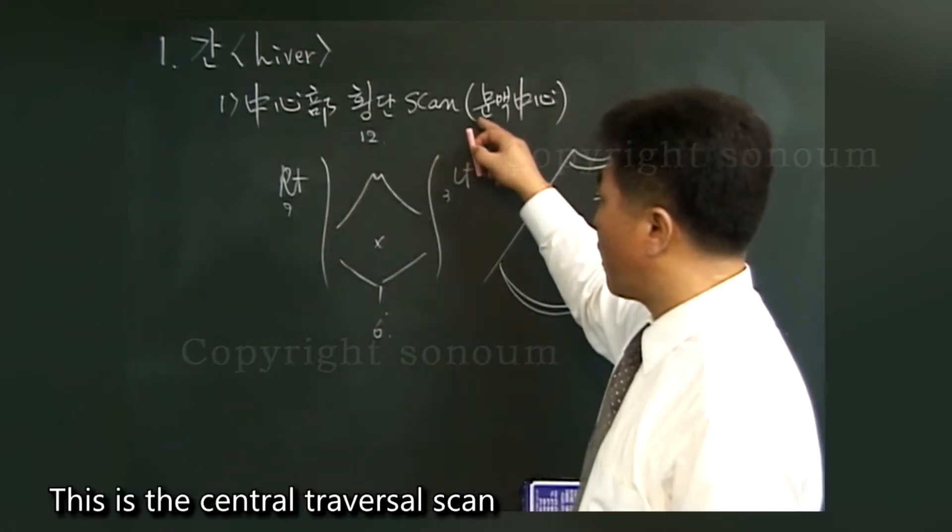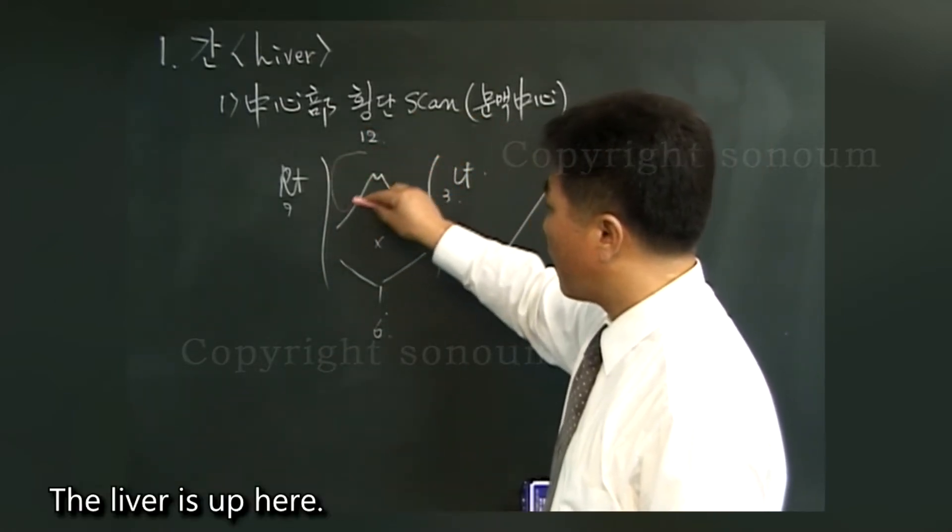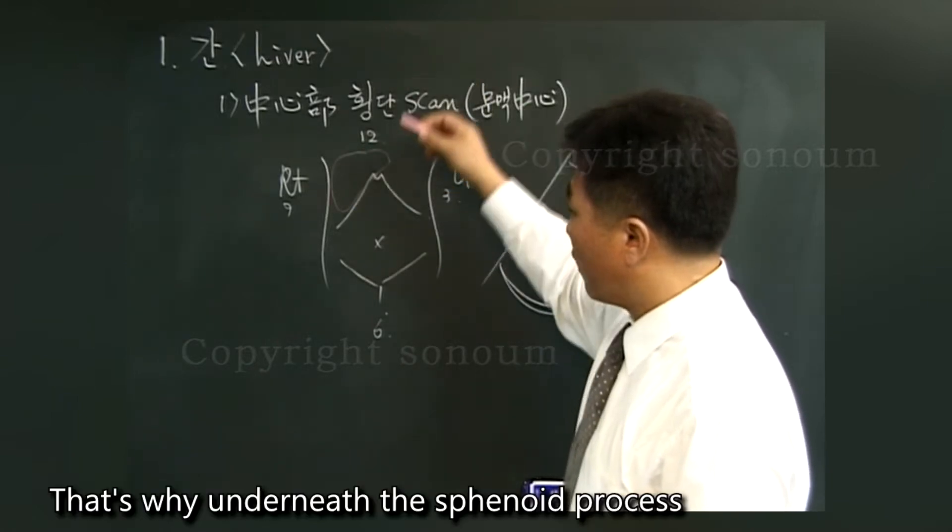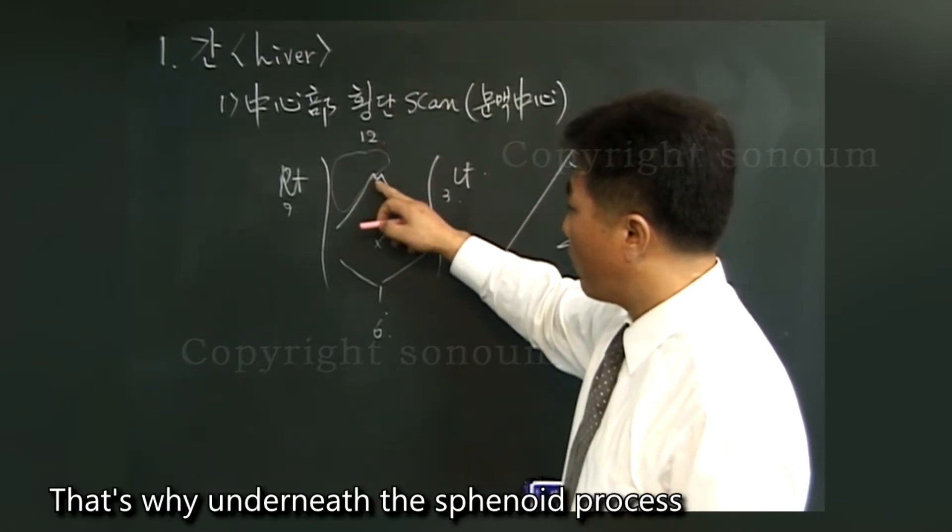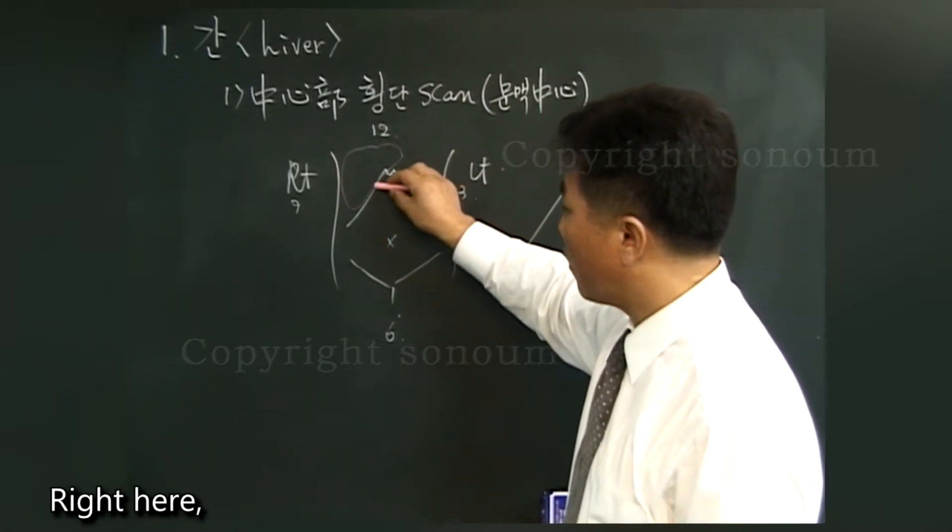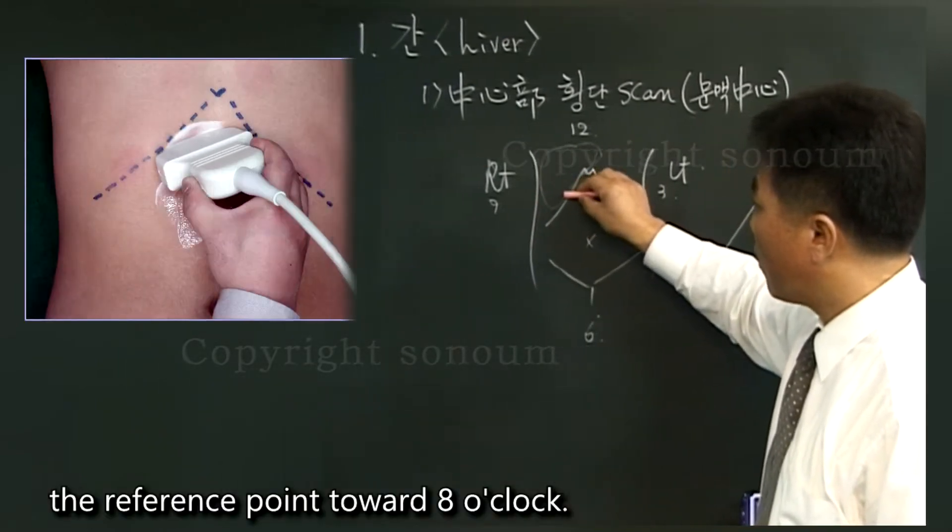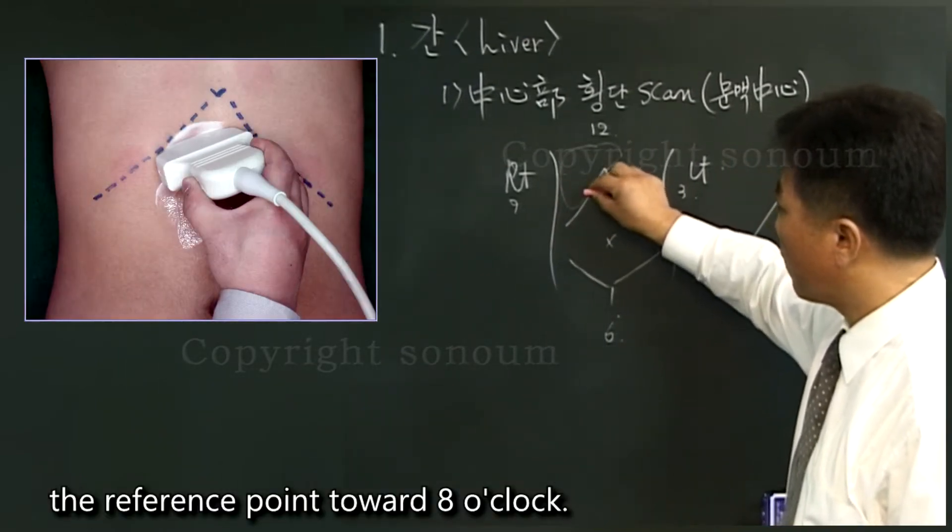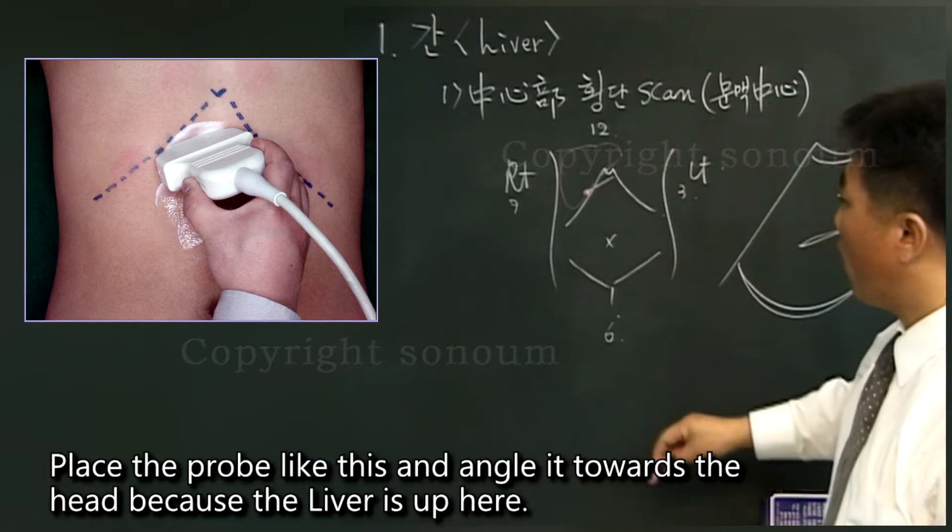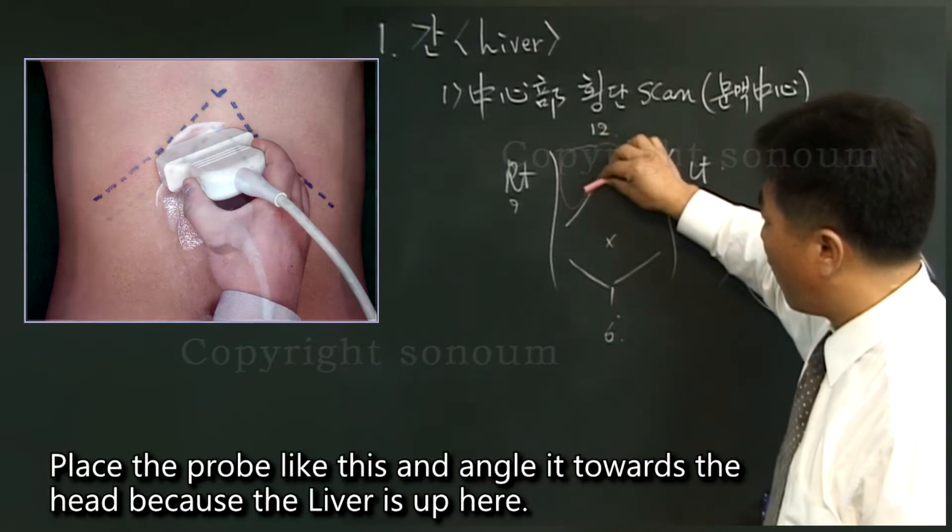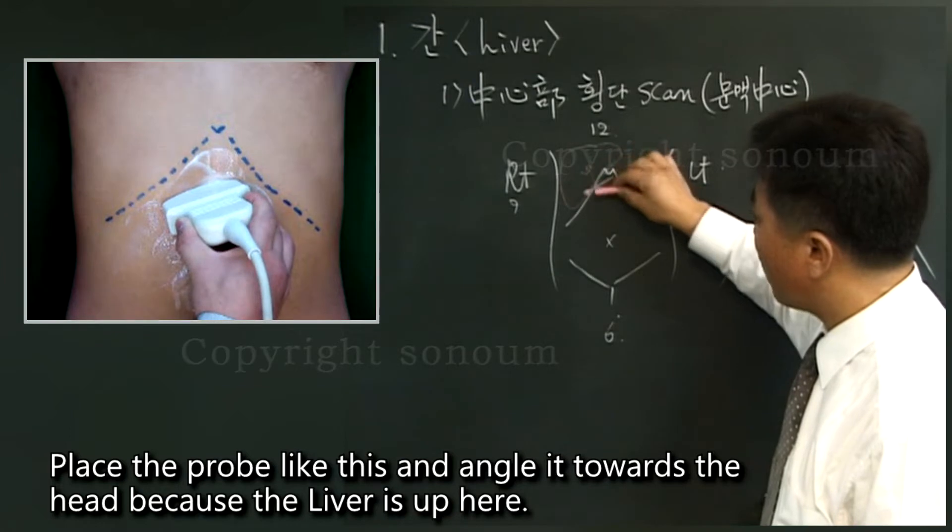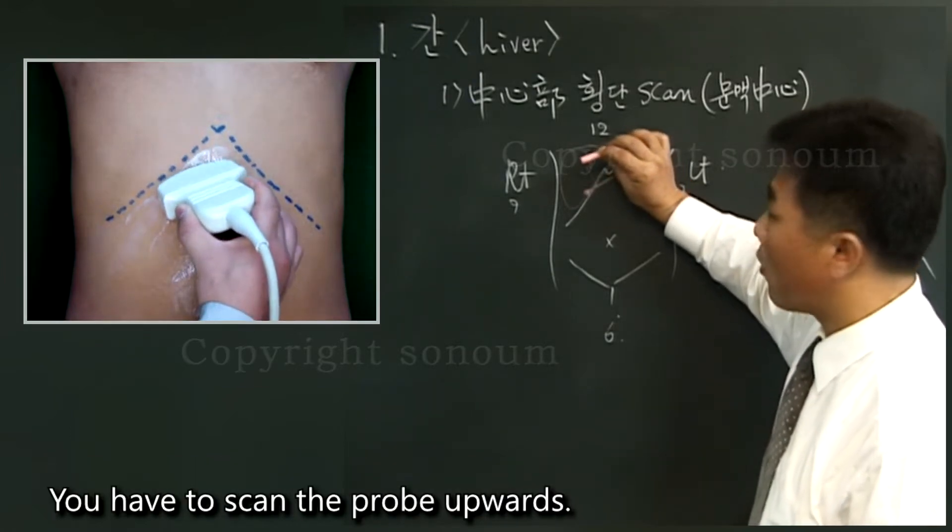This is the central traversal scan. The liver is up here. That's why underneath the xiphoid process, right here, the reference point toward 8 o'clock. Place the probe like this and angle it towards the head, because the liver is up here. You have to scan the probe upwards.